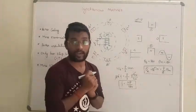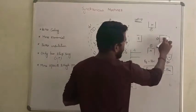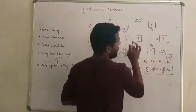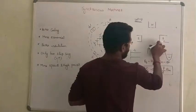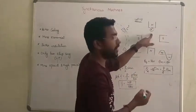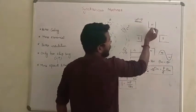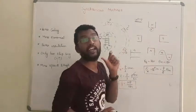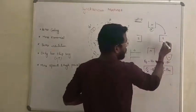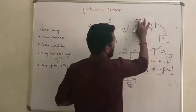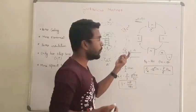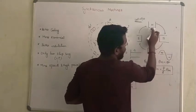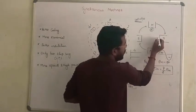Let us calculate the synchronous speed. Say we have a 4-pole synchronous machine. Initially, you have a north pole, south pole, again north pole, again south pole. At omega-t equal to 0, the poles are at the reference level. If I rotate this pole by 90 degrees, the north pole comes to where the south pole was — and when this north pole comes here, it becomes south pole.